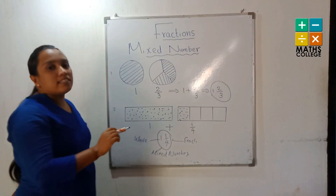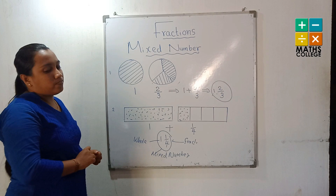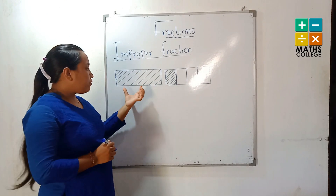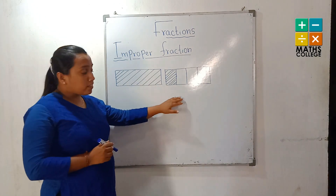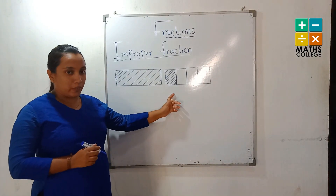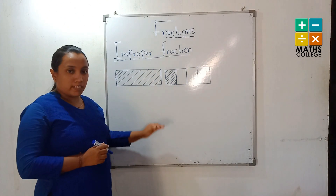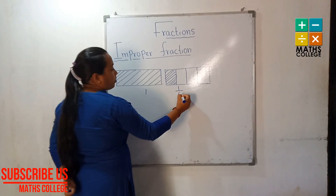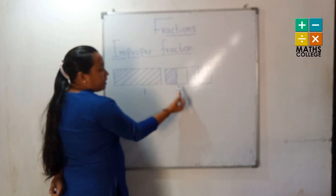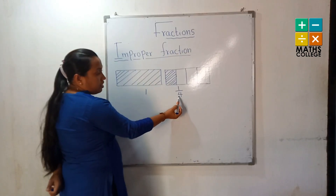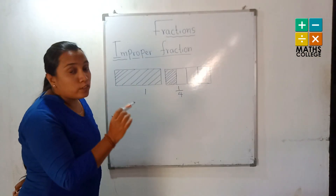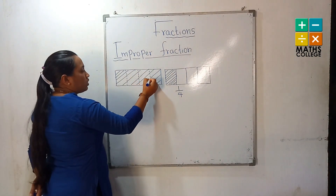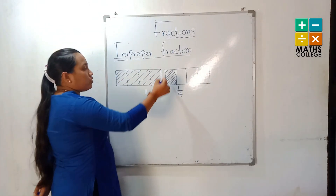What is the improper fraction? Two figures are represented. The first one is a whole figure fully colored. The second one is divided into four parts with one part colored. We know this can be represented as the mixed number 1 and 1 upon 4. Considering the second figure — divided into four equal parts — the first figure can also be divided into four equal parts. So we have four parts in the first figure plus one part in the second.